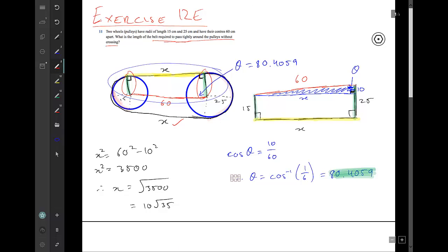So x squared is 60 squared minus 10 squared which gives us 3,500, and so therefore x equals square root of 3,500 which is 10 root 35. I'm going to keep that as an exact value for now, but I'm pretty happy with that because that means I've worked out this and I've worked out this.